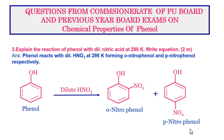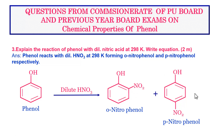Paranitrophenol is obtained in major quantity. The equation to be written is: C6H5OH in presence of dilute HNO3 gives orthonitrophenol — with NO2 attached at the ortho position — and paranitrophenol — with NO2 attached at the para position.